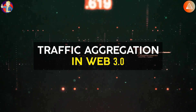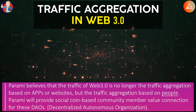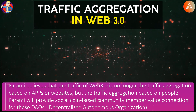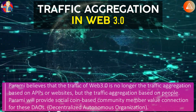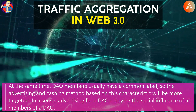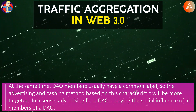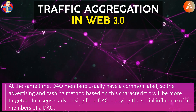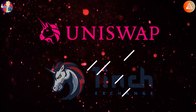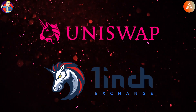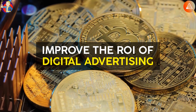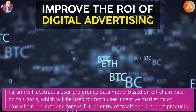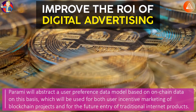Parami believes that the traffic of Web3 is no longer traffic aggregation based on apps or websites, but traffic aggregation based on people. Parami will provide social coin-based community member value connection for DAOs — Decentralized Autonomous Organizations. DAO members usually have a common label, so advertising and targeting based on this characteristic will be more targeted. In a sense, advertising for a DAO equals buying the social influence of all members of that DAO. Platforms like Uniswap and 1inch have already started to adopt an incentive model based on on-chain behavioral data for token incentives. Parami will abstract a user preference data model based on on-chain data, which will be used for user incentive marketing of blockchain projects and for the future entry of traditional internet products.